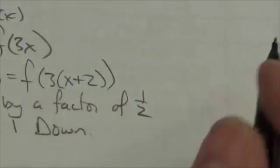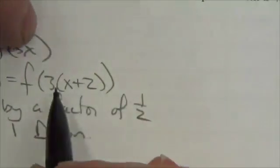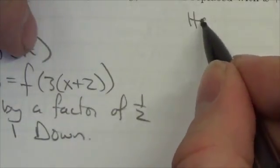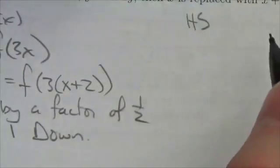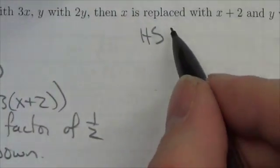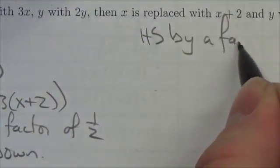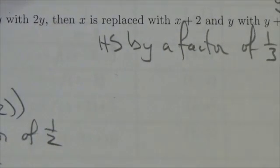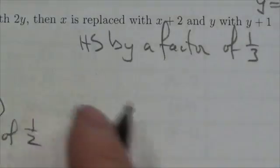Now we can take a look at the horizontal. If I was to get the x by itself, one of the things I would have to do is divide by 3. So that's a horizontal stretch by a factor of 1 third. That's what we're getting here.